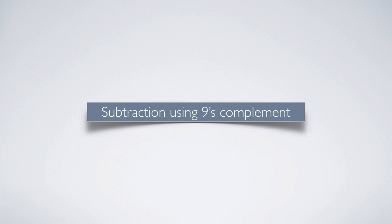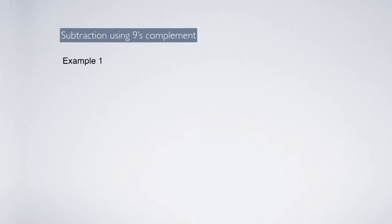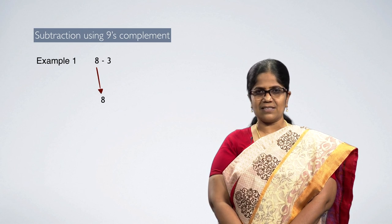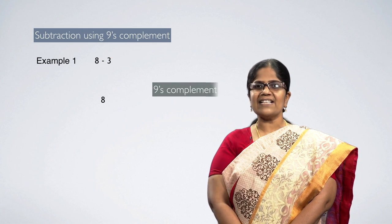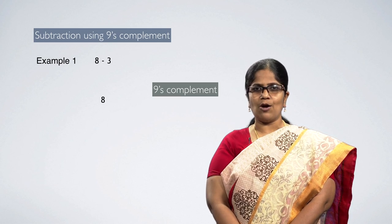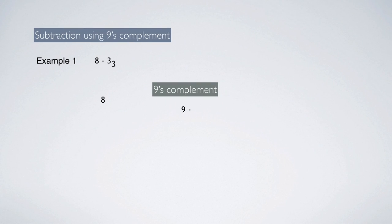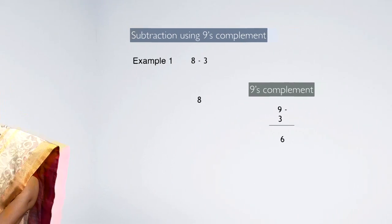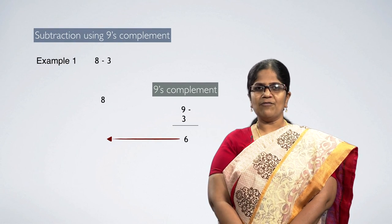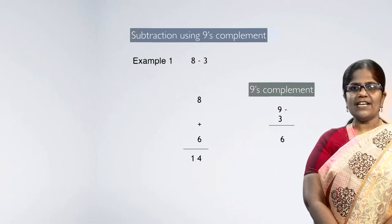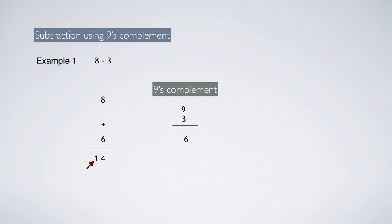Now we are going to see subtraction using 9's complement method. Example 1: subtract 3 from 8. The first number 8 is taken as it is. For the second number 3, take 9's complement. The procedure is: the given number is subtracted from 9. So 9 minus 3 equals 6. Now we have two numbers: 8 and 6. Perform regular decimal addition — 8 plus 6 equals 14. We have a carry of 1. Perform end-around carry: 1 is added again with 4 and the result is 5.